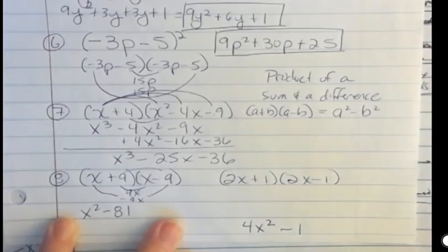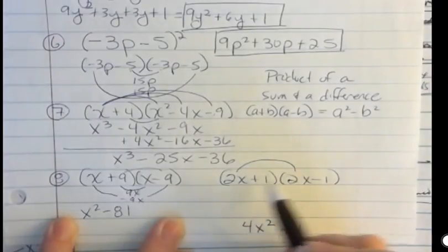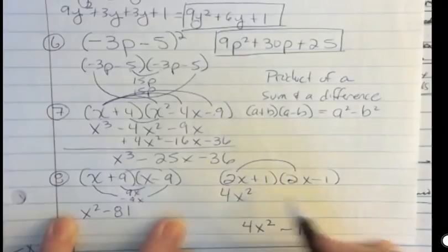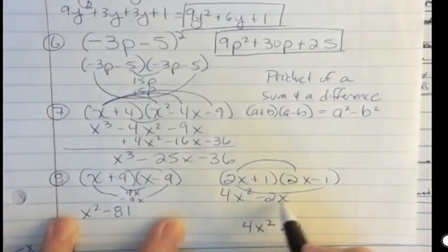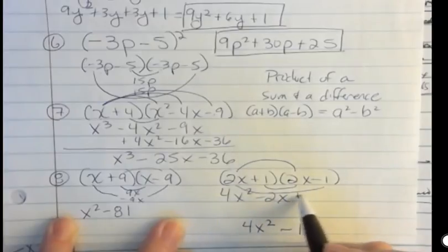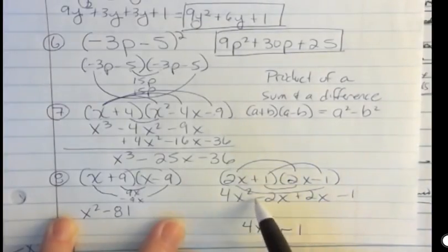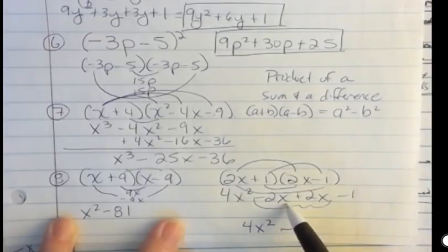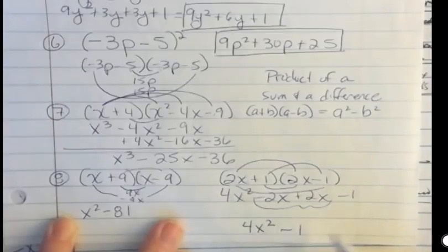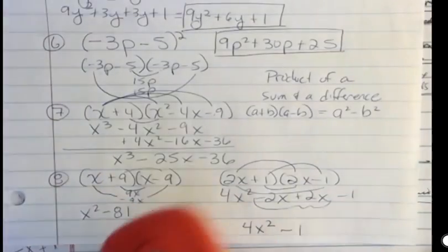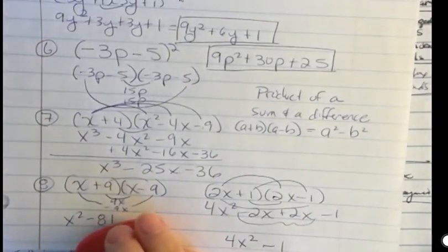If you don't remember that, then FOIL it. What you're going to get here is 2x times 2x, which is 4x squared, and then you're going to get negative 2x from the outside and positive 2x from the inside, and then negative 1. And what's going to happen is these two terms, the minus 2x and positive 2x, drop out, leaving you 4x squared minus 1. That's everything you need to know about multiplication. Have a great day.